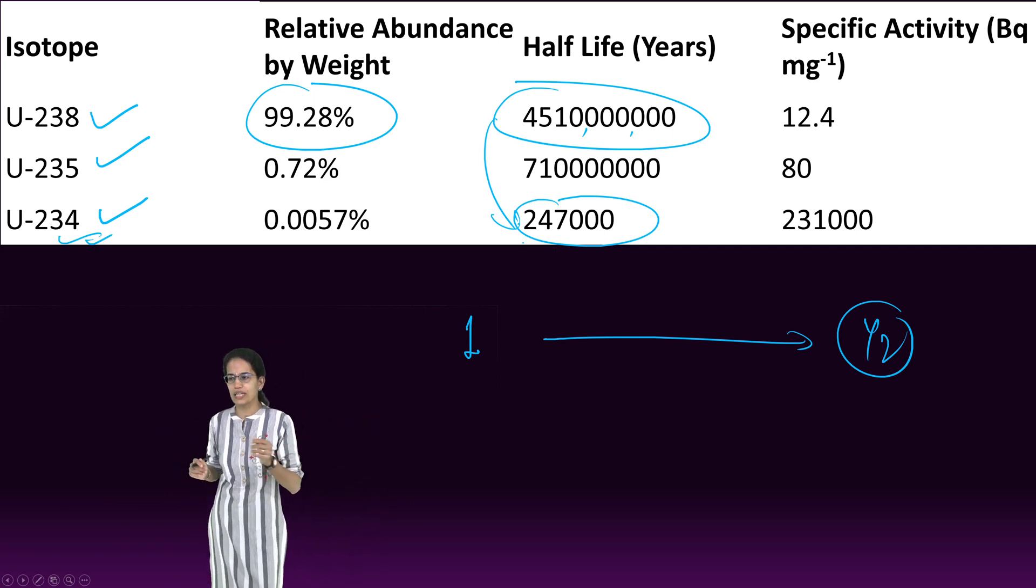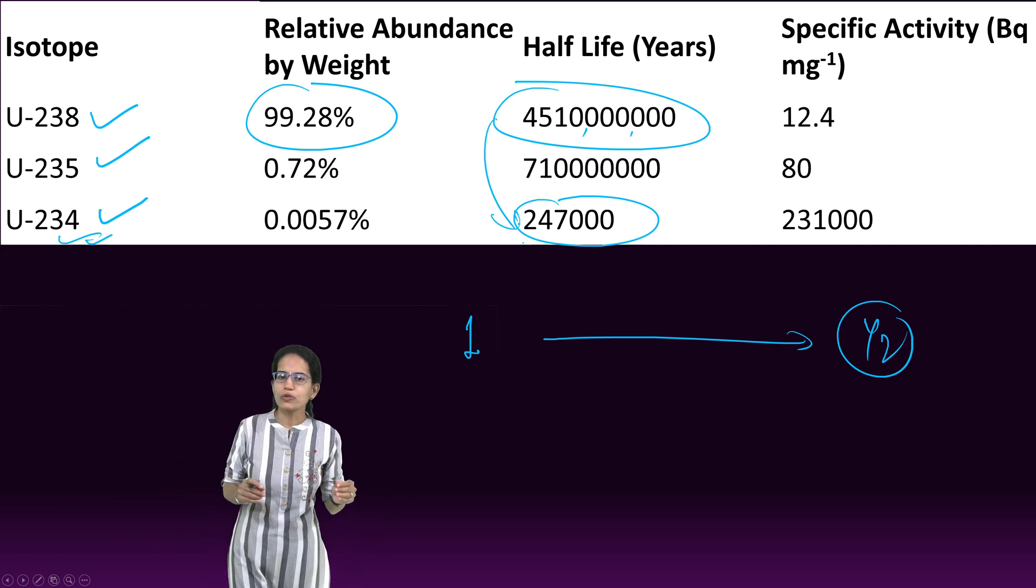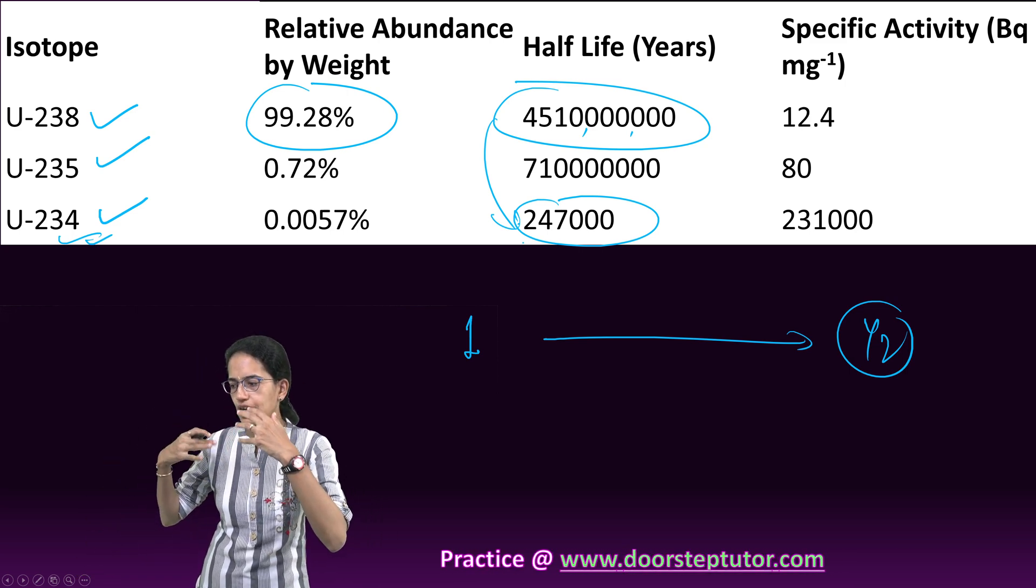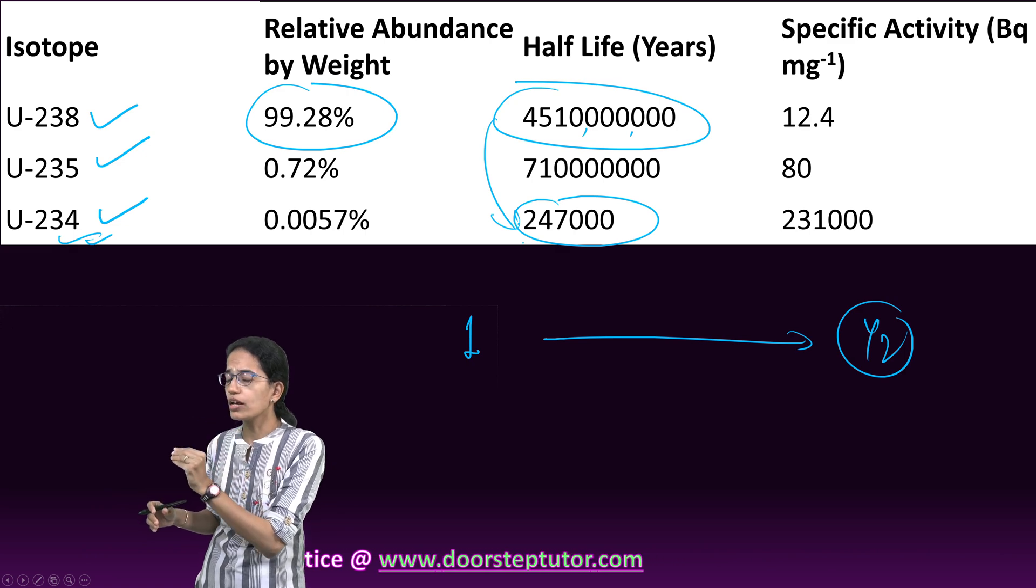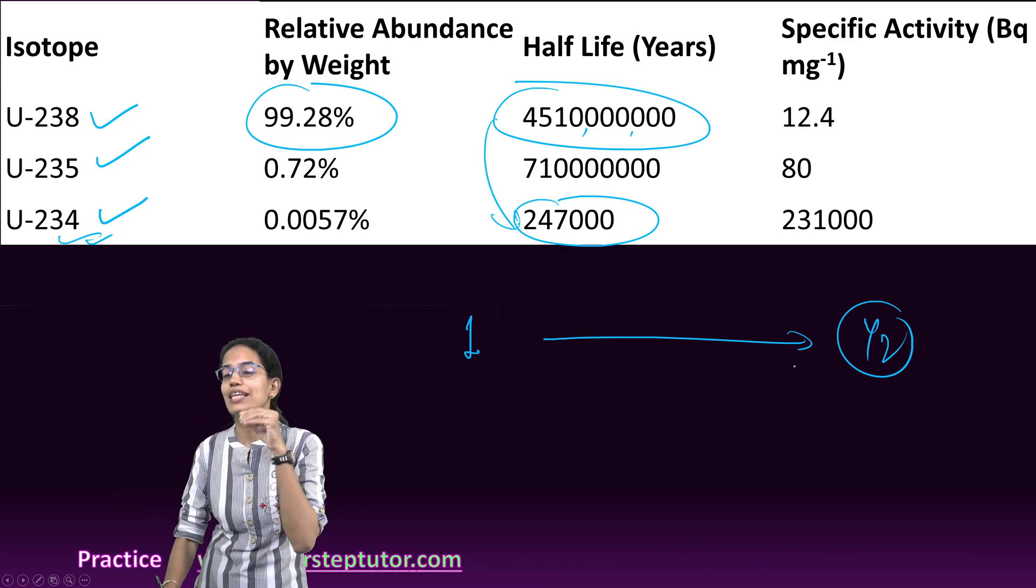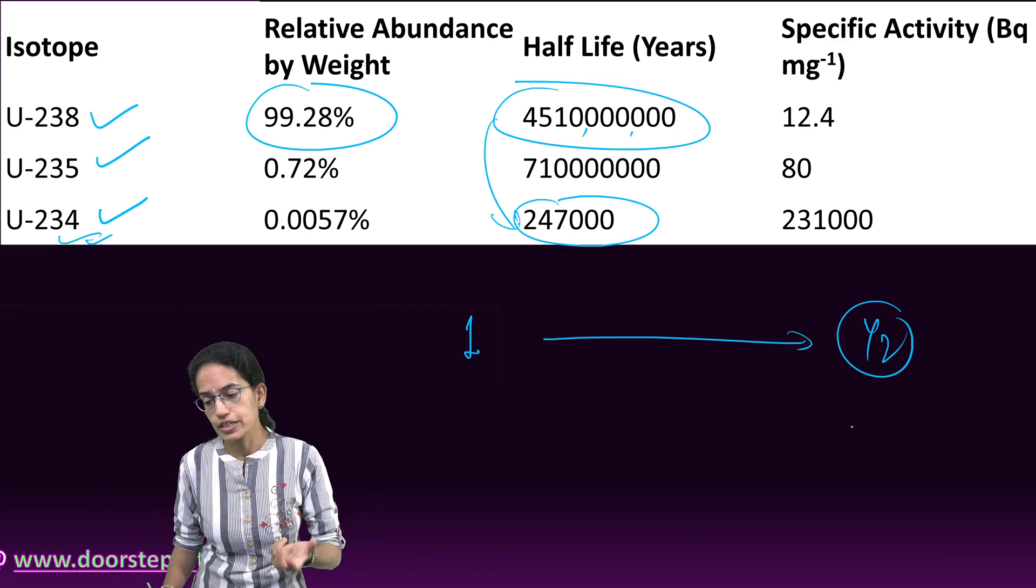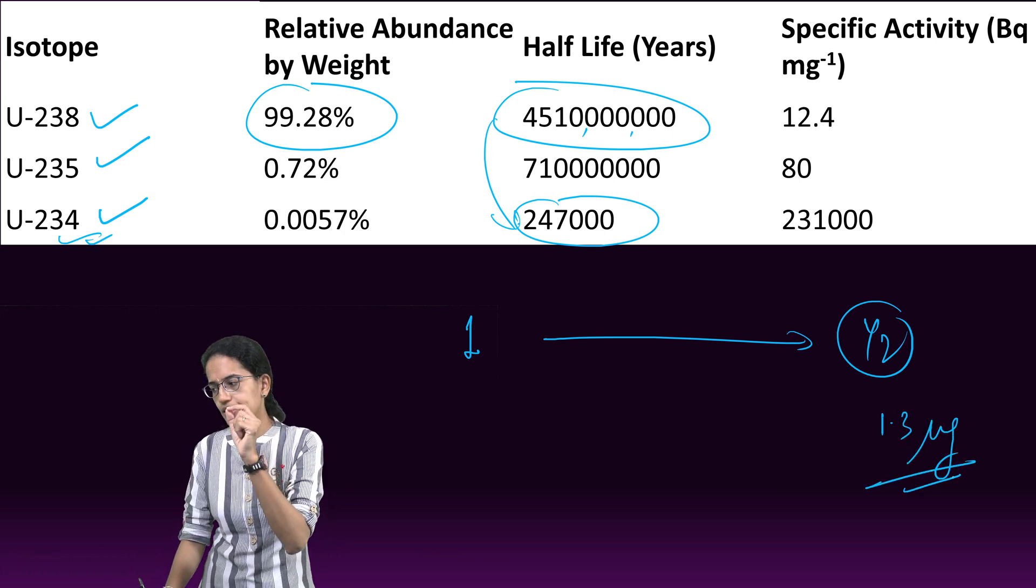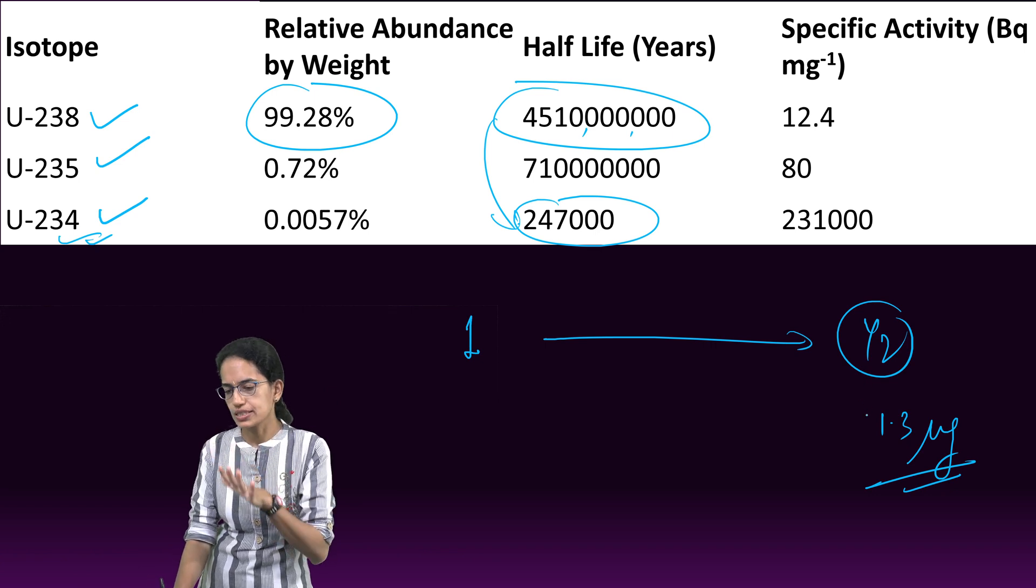In trace amounts, uranium is present in soil, rocks, air, and water - even in our lungs when we breathe. In small amounts that's okay, but beyond that it is detrimental to health. The permissible limit is 1.3 micrograms per day.